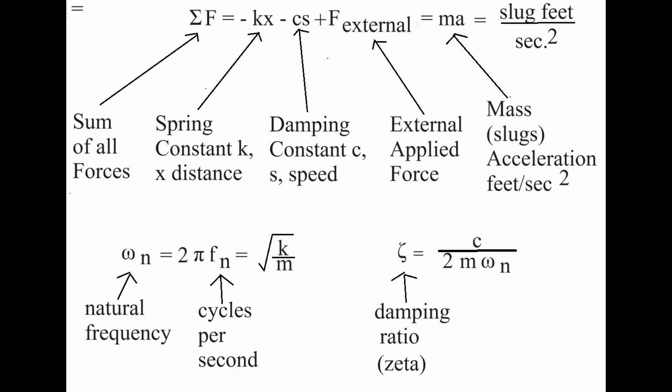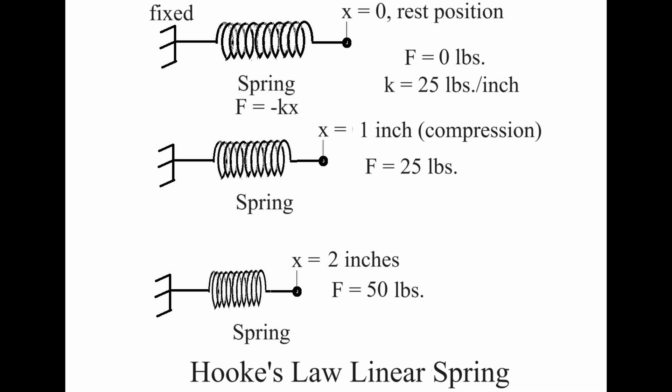We have explained the terms in the top equation. Zeta, or squiggle, is the damping ratio. The damping constant C is the numerator, and the denominator is also familiar terms. Refer to the Wikipedia page for a spring mass damper model for further details. The spring and damper are the only two things we have to adjust, so we will look at them in detail.